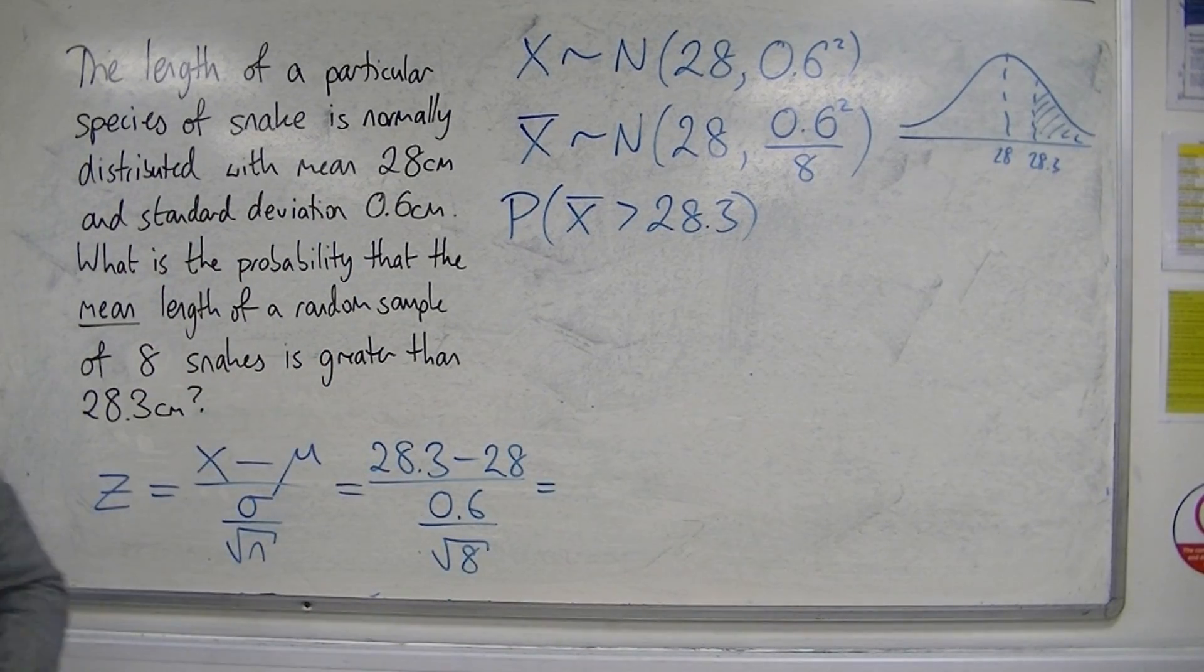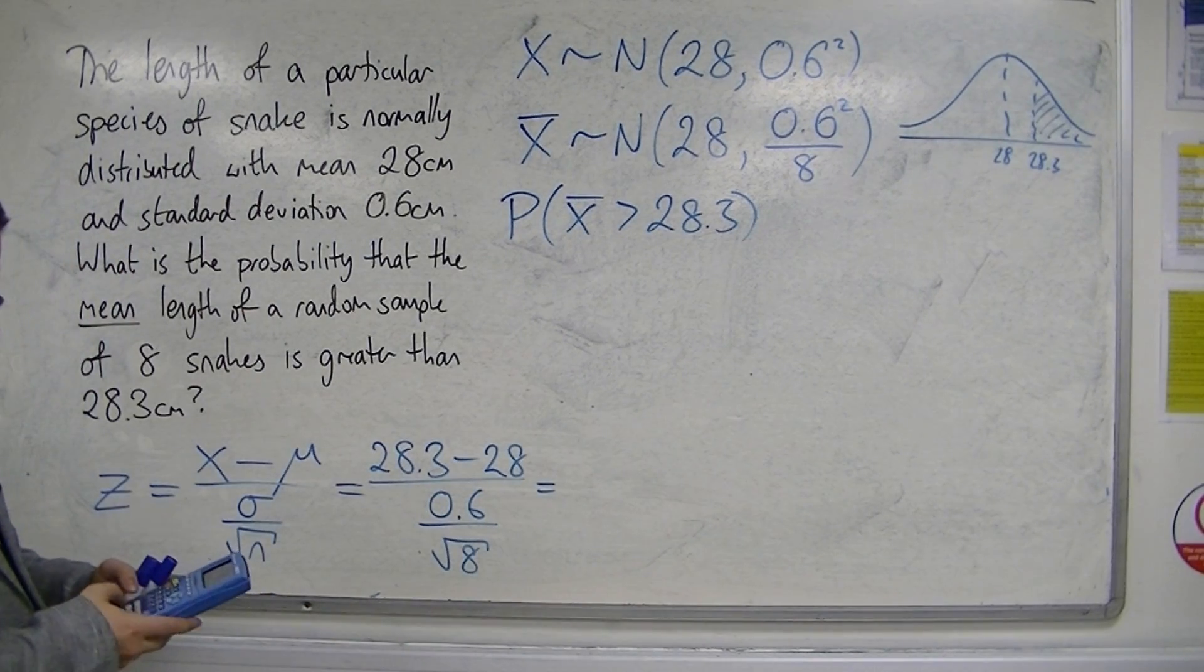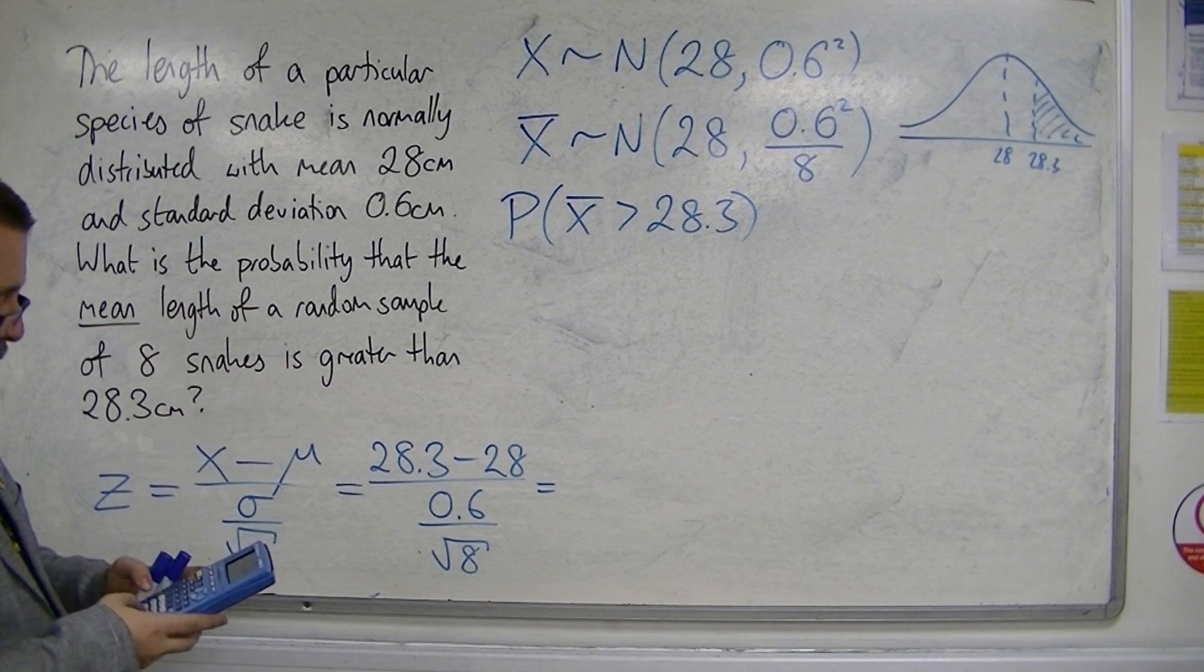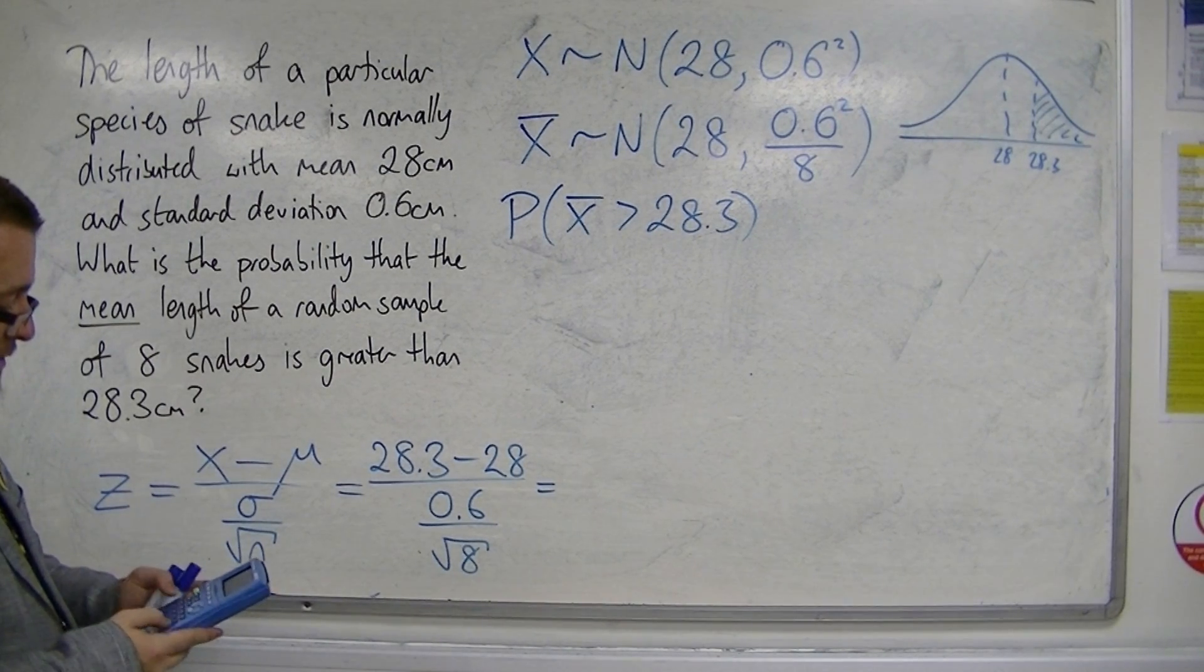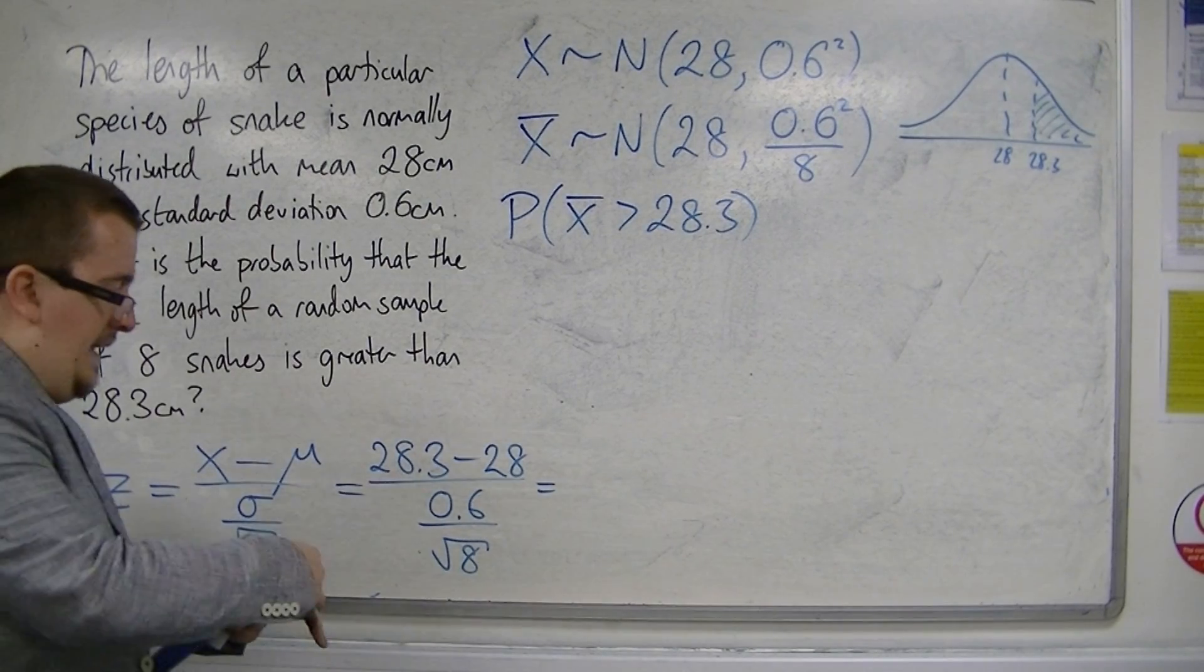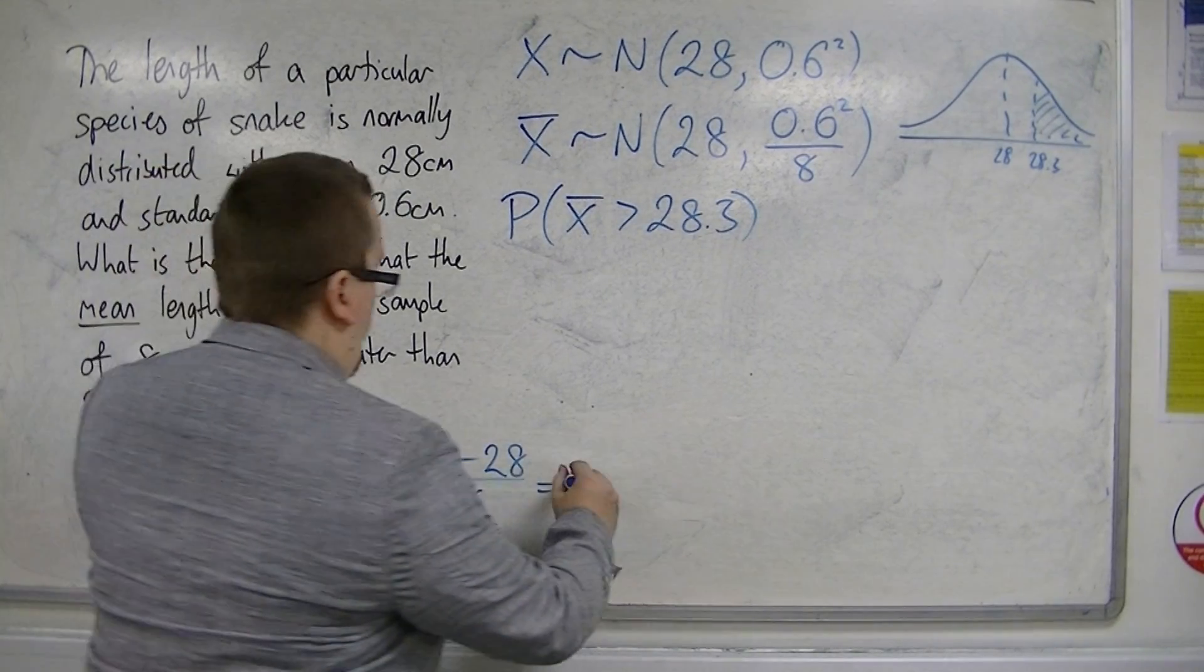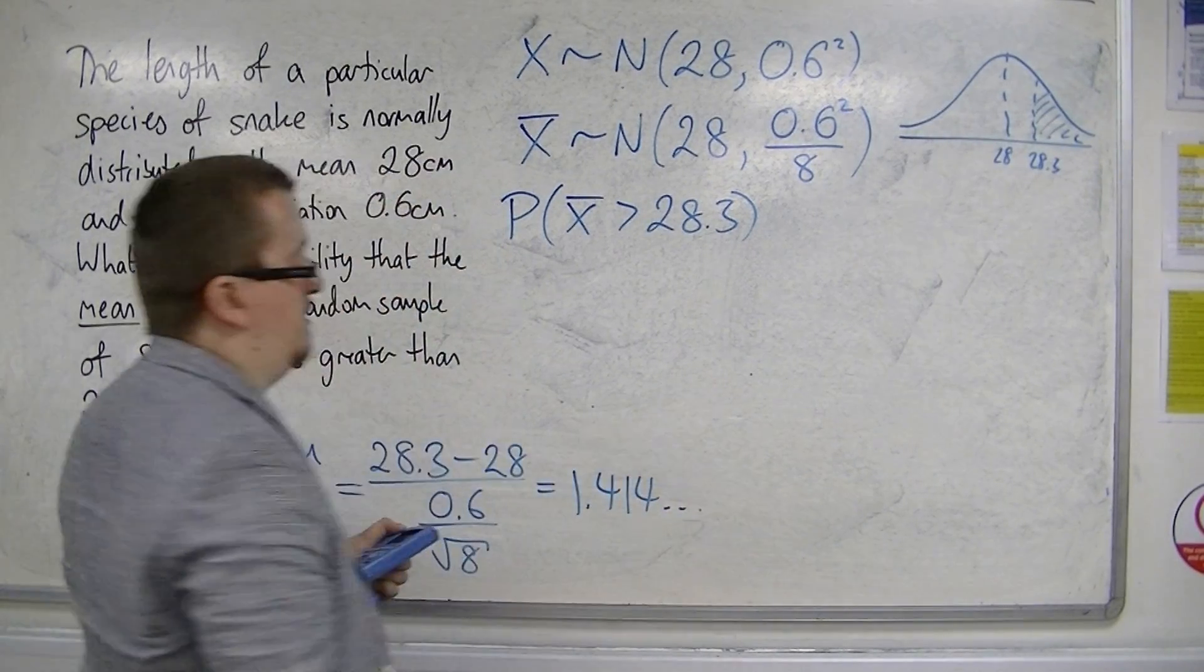So 28.3 take away 28, divided by 0.6, divided by root 8, and that gets me 1.414 to 3 decimal places.